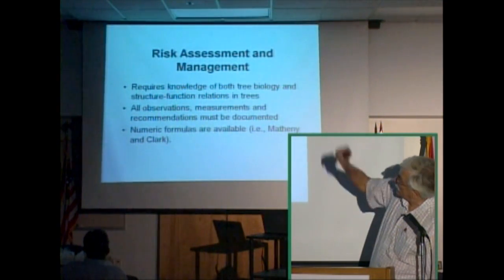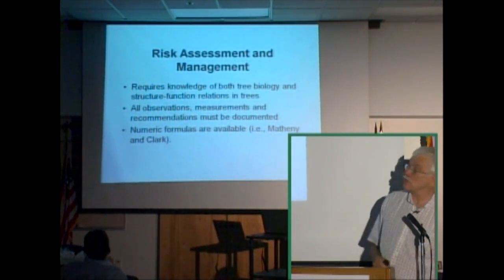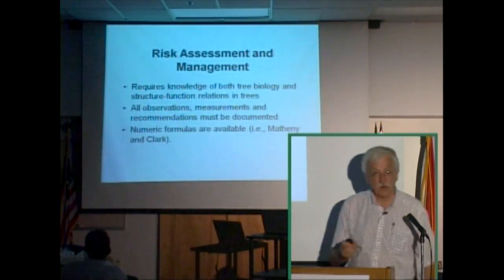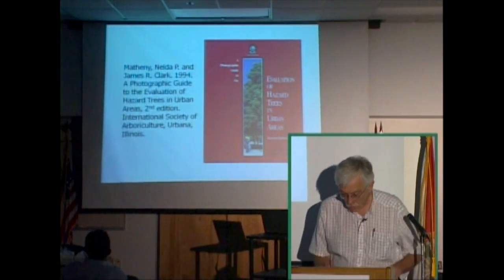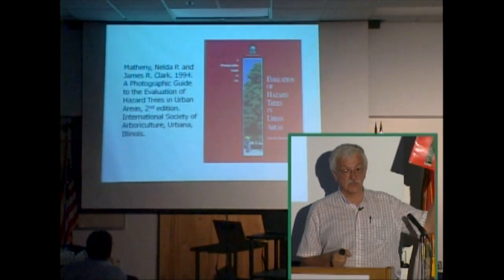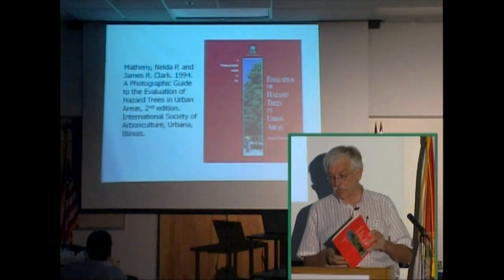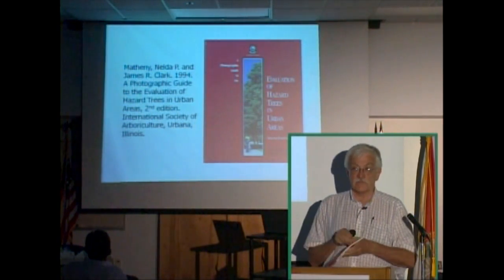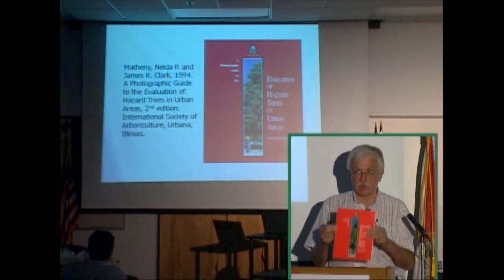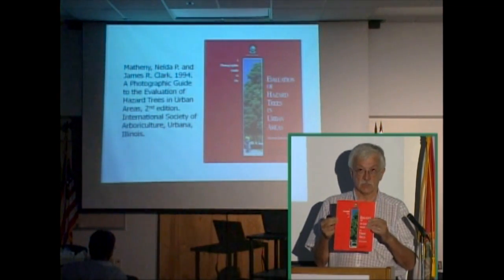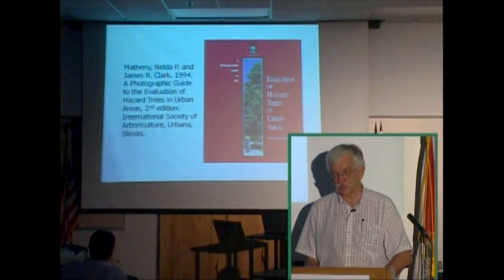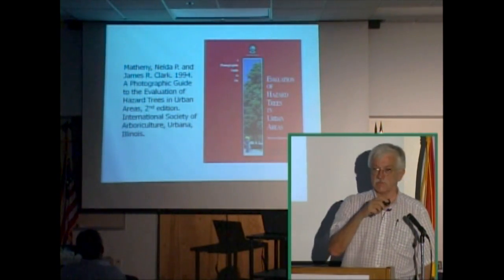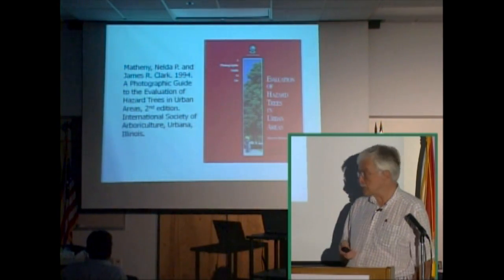In order to do this, you have to understand tree biology and the structure and function relations of trees. You have to document all your observations and measurements, and there are numeric formulas that are available. The one that most people use has been published by the International Society of Arboriculture. It's entitled 'Photographic Guide for Evaluation of Hazard Trees in Urban Areas, Second Edition.' If you're going to do this as a specialized part of your practice, I strongly urge you to get this book. It's full of information on how to do inspections, on relative risk levels, and on case studies of hazard trees in the past.